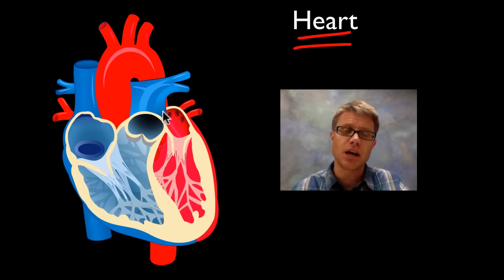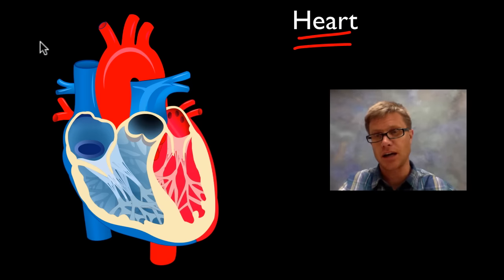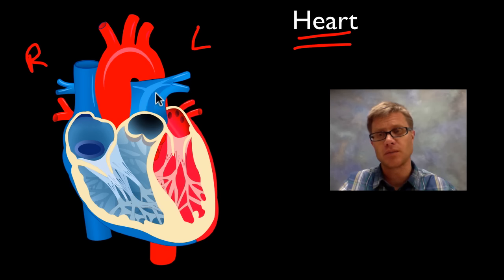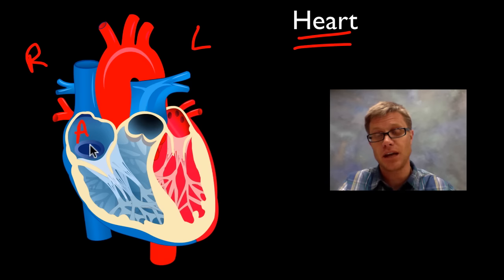Let's start with the heart. It's important that you understand the chambers of the heart and where blood is going. Whenever you see a diagram like this, imagine yourself shifted into the heart — your right side is over here and your left side is over here. Let's start with deoxygenated blood, which means it's coming back from your body. It's coming from your superior and inferior vena cava, entering into what's called your right atrium.